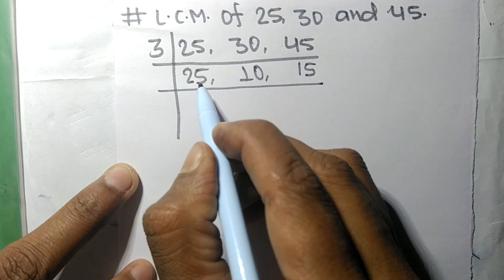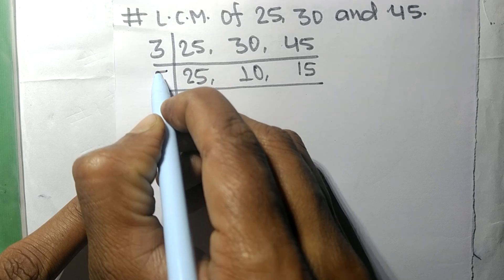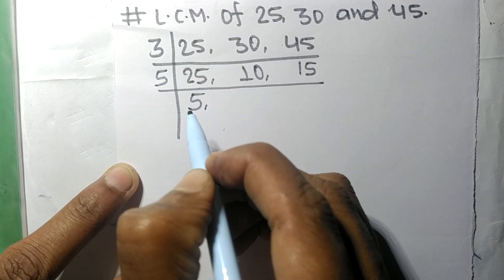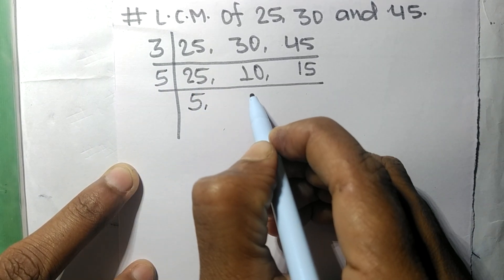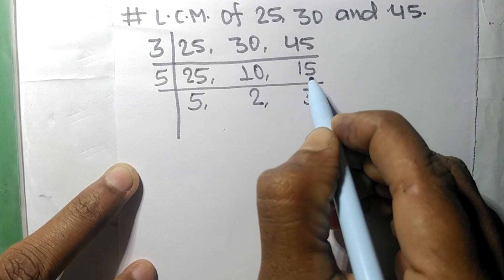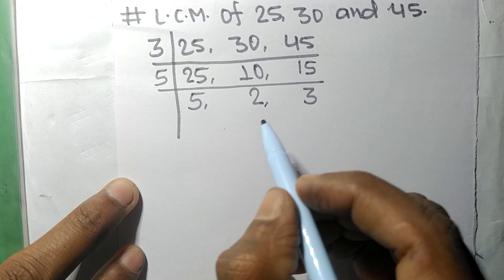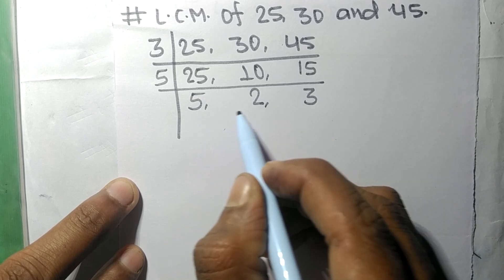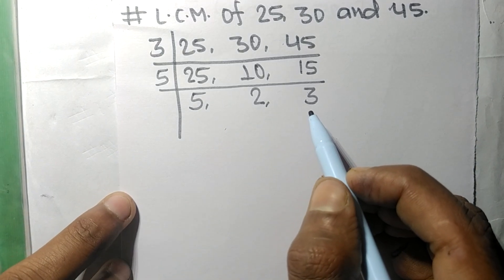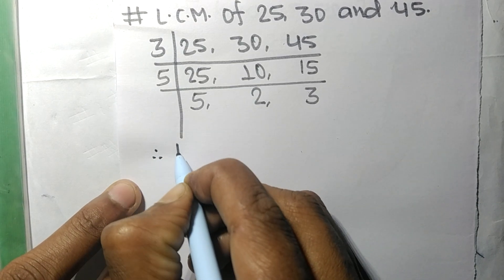Now all the resulting numbers are divisible by 5. 5 times 5 is 25, 5 times 2 is 10, and 5 times 3 is 15. This gives us 5, 2, and 3, which are not divisible by any common number.